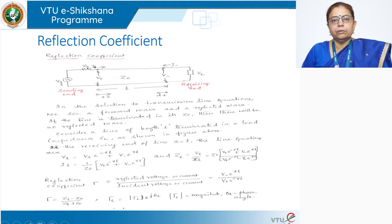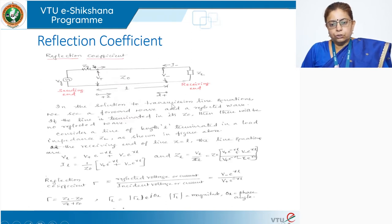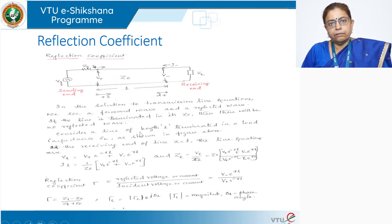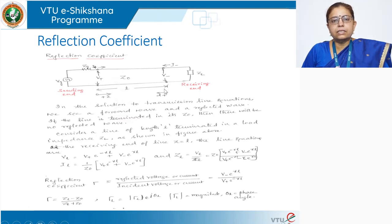We will see more on this when we look at impedance matching. If the two impedances are equal, there will be no reflected wave — such a line is called a flat line. Let us now modify the equations in terms of Z, the distance parameter, by putting Z equal to L, since we are considering the length of the line to be L. When Z equals L, we are writing the equations at the load end of the line.